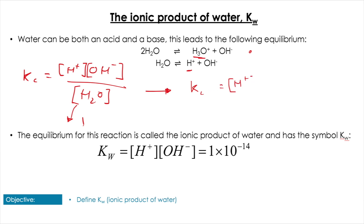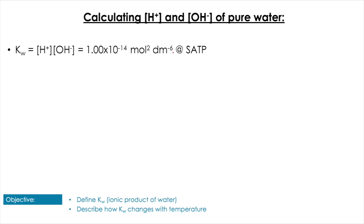This is by definition the value of Kw — the equilibrium constant for water. At SATP that value is 1 × 10⁻¹⁴, which is in your data booklet. We'll be doing several calculations with this expression. First, let's calculate [H⁺] and [OH⁻] in pure water using just the value of Kw.